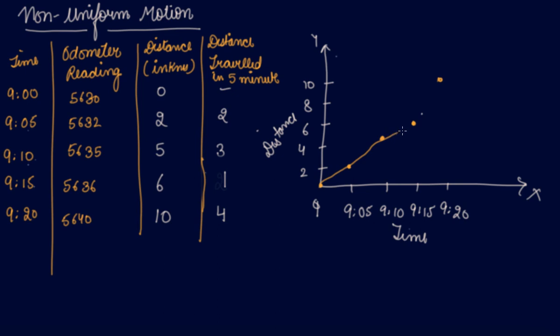This is how the car moved in non-uniform motion. There is no uniform distance being traveled — in one 5-minute interval it travels only 2 kilometers, in another 5 minutes it travels 3 kilometers, then 1 kilometer, then 4 kilometers. We always take time on the x-axis and distance on the y-axis, plot the points, and connect them on the graph.